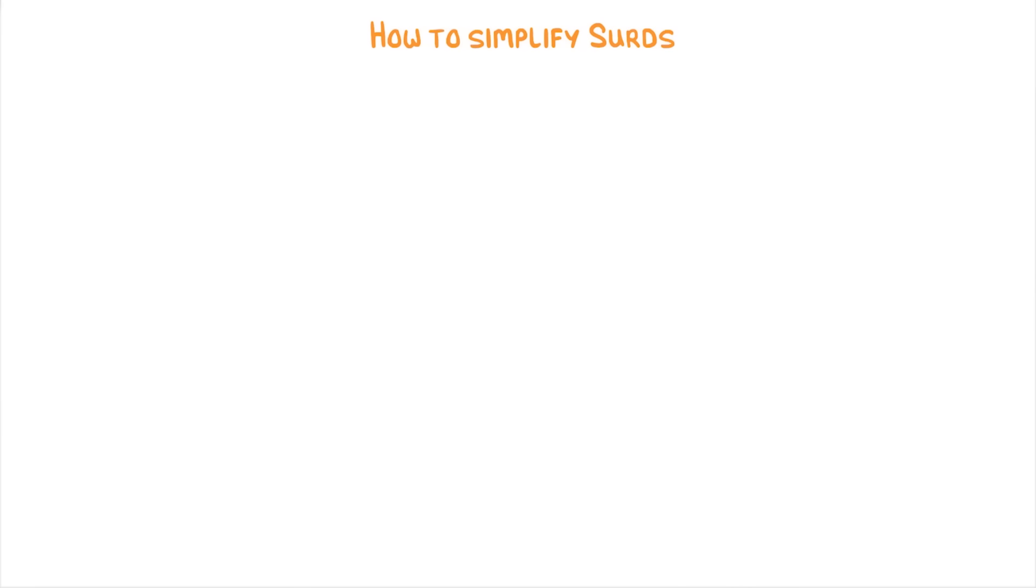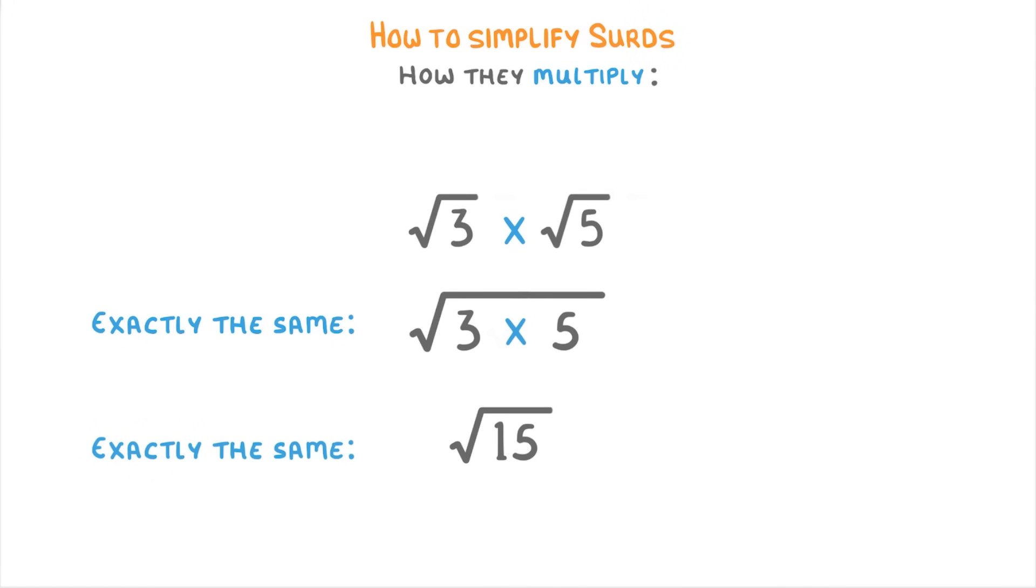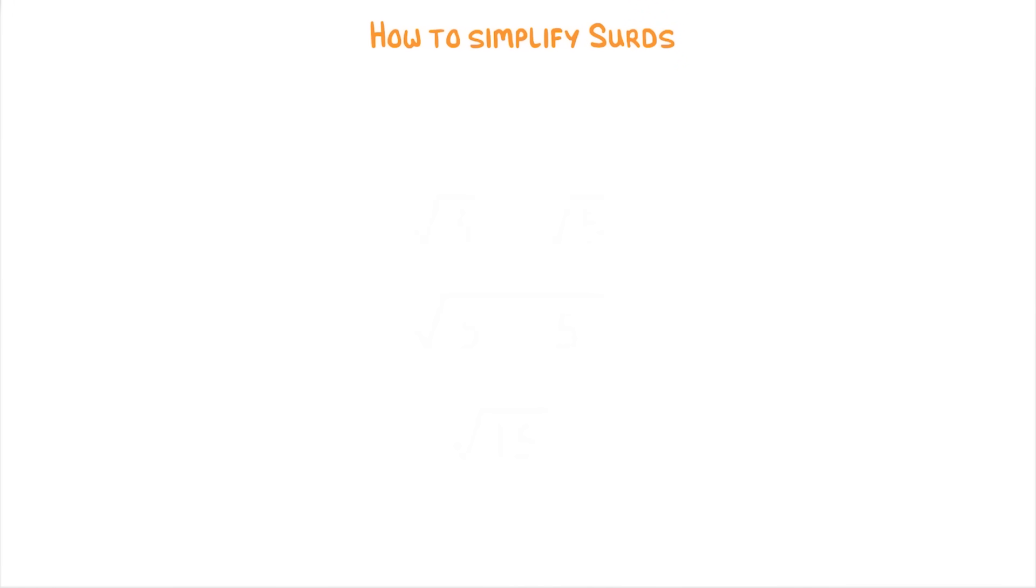The other thing that you need to know before you can simplify surds is how they multiply. If we took the square root of 3 and multiplied it by the square root of 5, then that's exactly the same thing as the square root of 3 times 5, or the square root of 15.